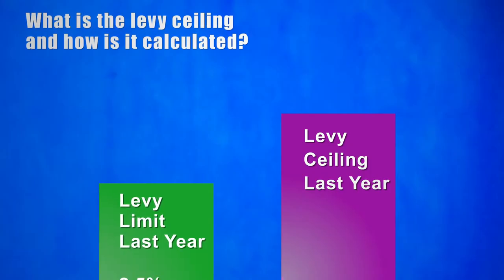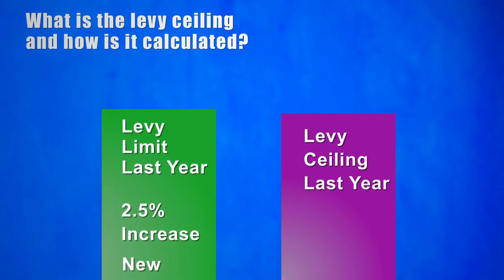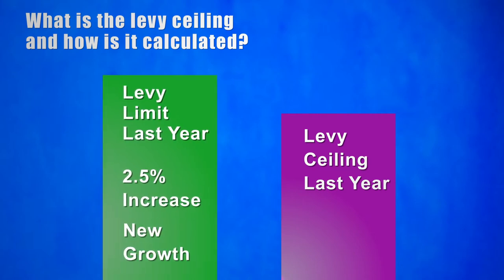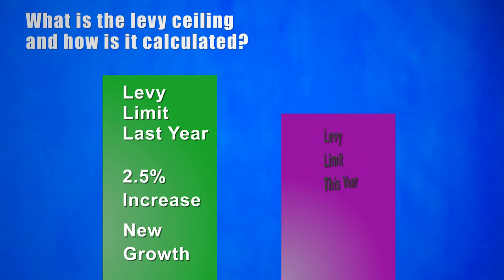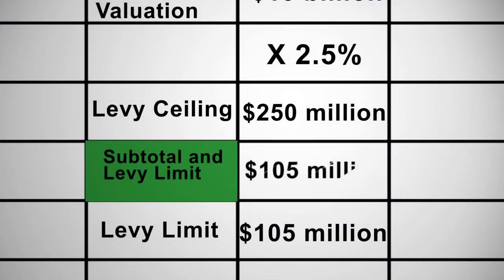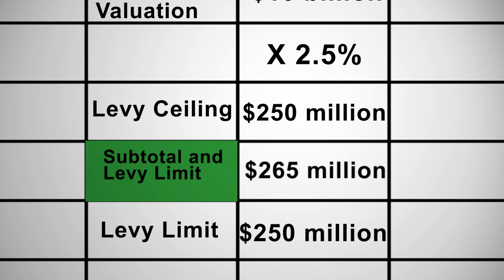If last year's levy limit, as increased by two and a half percent and new growth, is more than the levy ceiling for the year, then the ceiling becomes this year's levy limit. As we explained before, the levy limit must fit within the levy ceiling for the year. In the earlier example, if our subtotal had been $265 million instead of $105 million, then the community's levy limit would be $250 million. This highly unusual circumstance is unlikely to affect most communities.